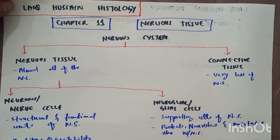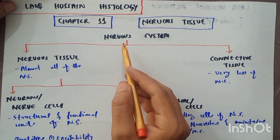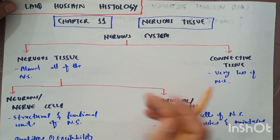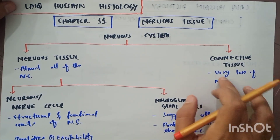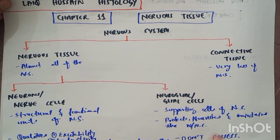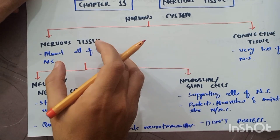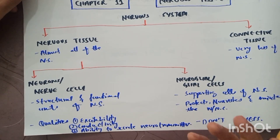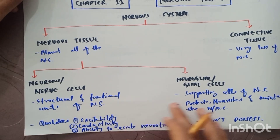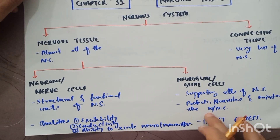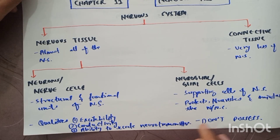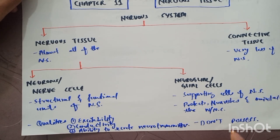To do a quick recap: the nervous system is made up of two types of tissues — nervous tissue and connective tissue. Nervous tissue makes almost all of the nervous system, while connective tissue forms only some specific small structures. The nervous tissue consists of two types of cells: neurons, which are the structural and functional units, and neuro glial cells, which are supporting cells that protect, nourish, and maintain neurons. Neurons have excitability, conductivity, and the ability to secrete neurotransmitters, while glial cells do not possess these qualities.